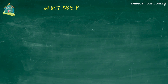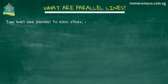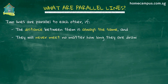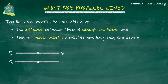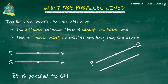Next up, we learn about parallel lines. Two lines are parallel to each other if the distance between them is always the same and they do not meet no matter how long they are drawn. These are some examples of parallel lines. In the first figure, EF is parallel to GH. In the second figure, PQ is parallel to RS.